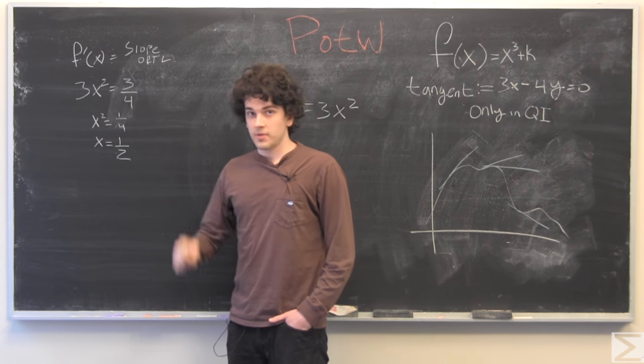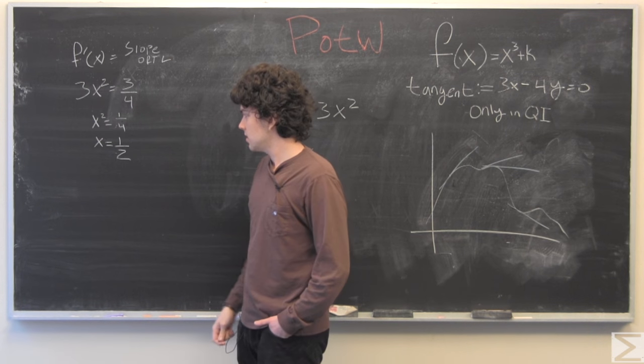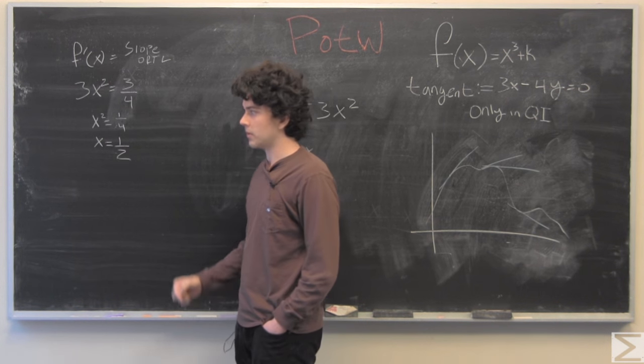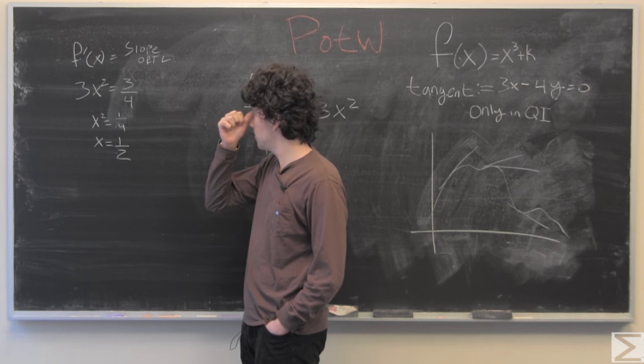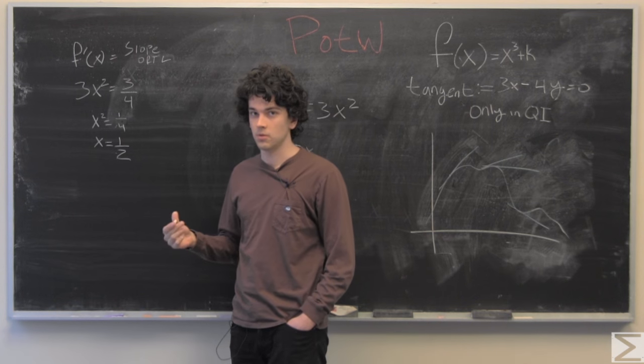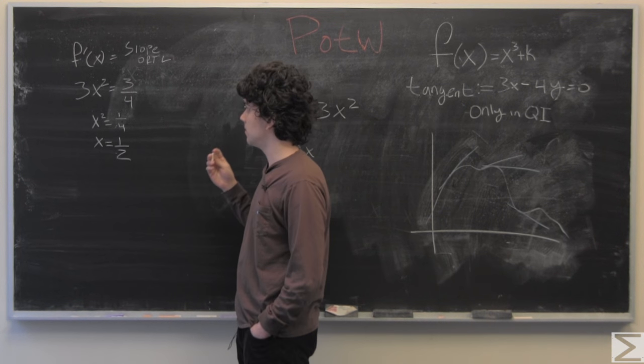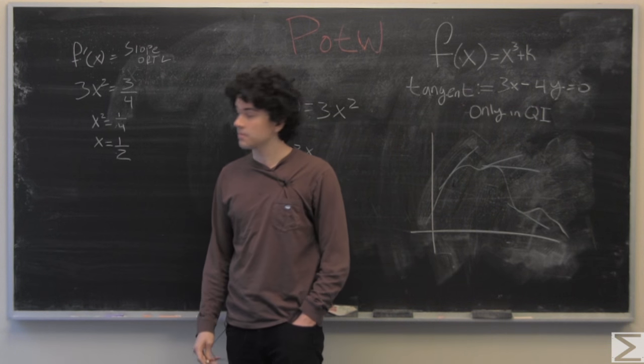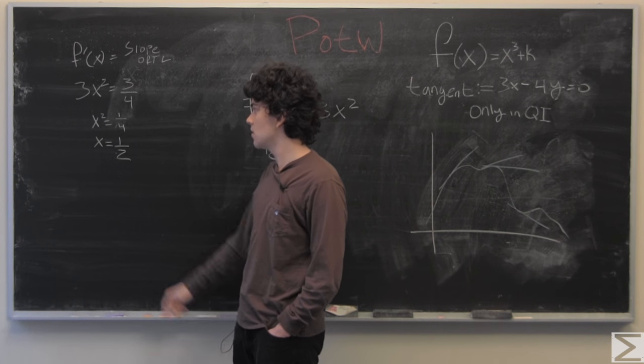Setting the derivative equal to the slope of the tangent line gives us an x-coordinate, where we know the slope of the tangent line to be equal to the slope of our function, and that's x = 1/2.